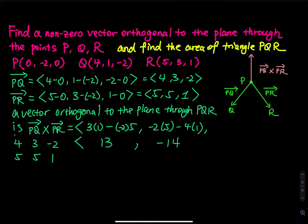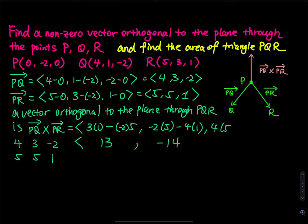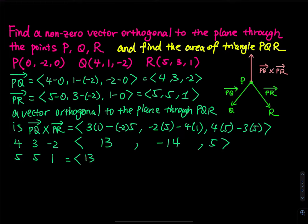And then the last piece: we have 4 times 5, and then minus 3 times 5. So this is 20 minus 15, which equals 5. So here is the cross product: we have 13, negative 14, 5.